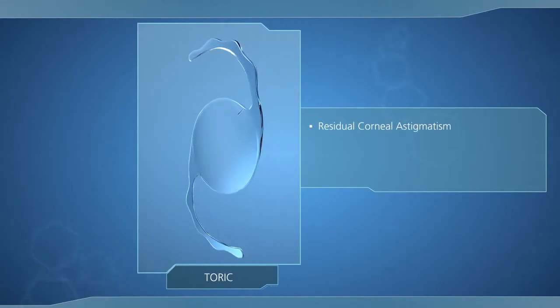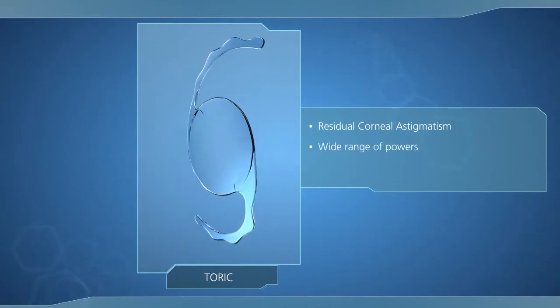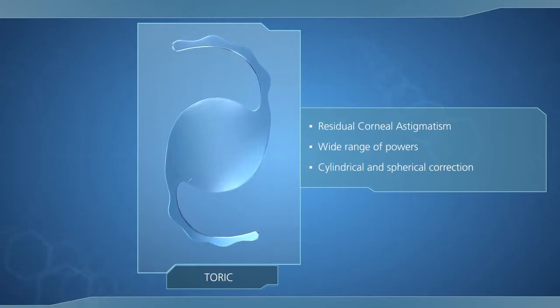For pseudophakic patients with residual corneal astigmatism, duetting with the toric SulcoFlex model is the ideal solution. A wide range of powers for cylindrical and spherical correction make this lens a precise tool with reliable results.